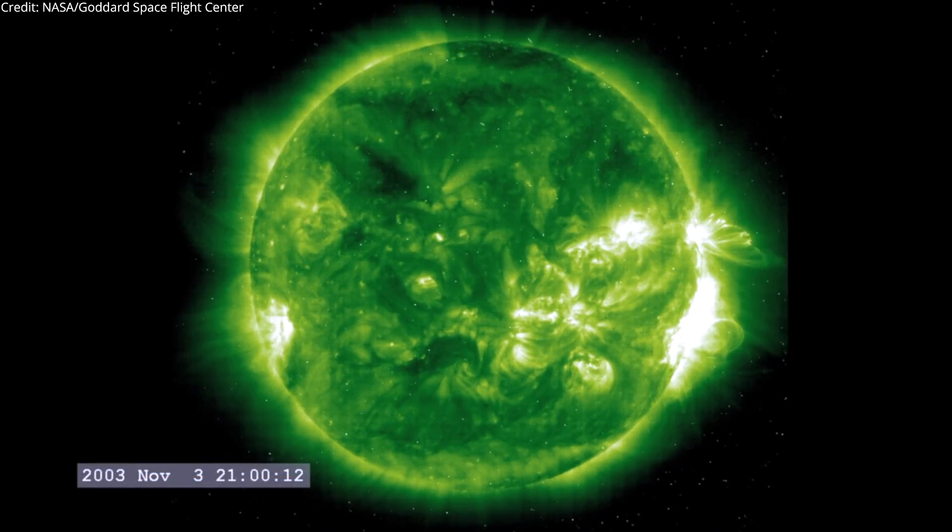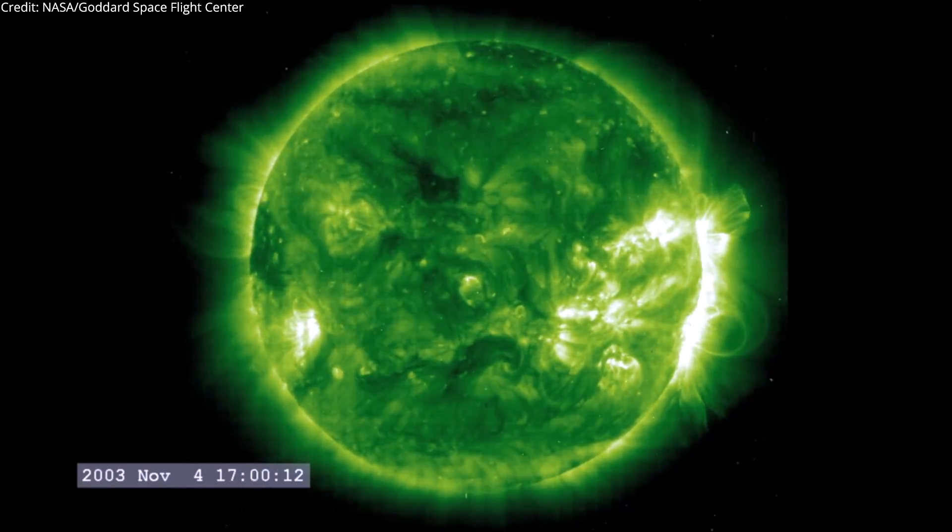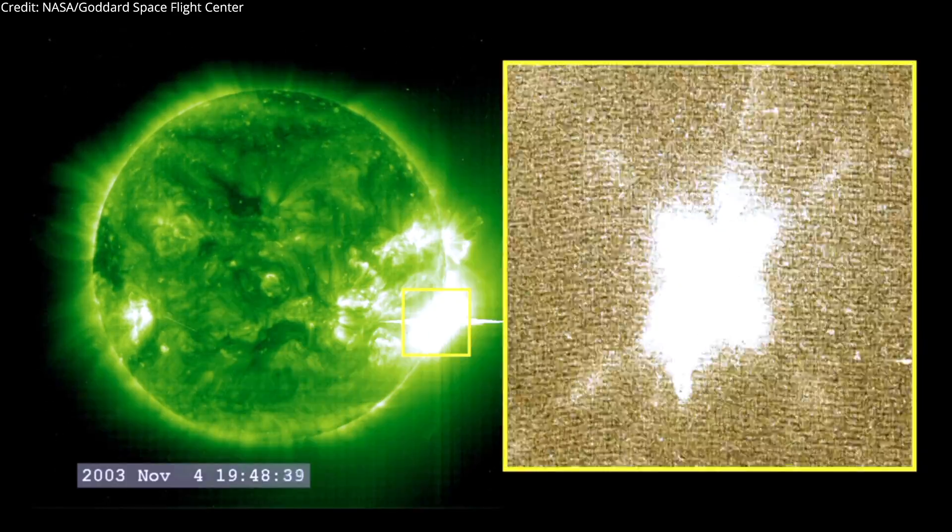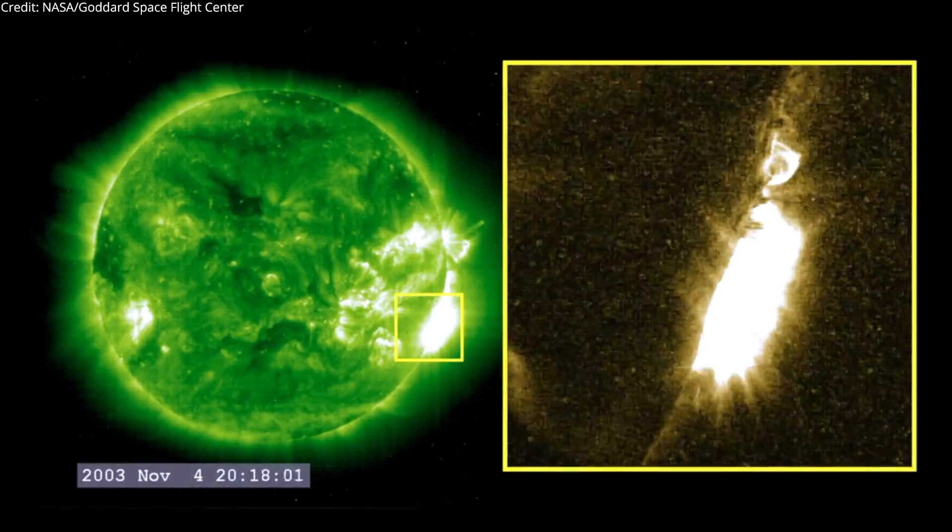The most powerful flare on record was in 2003, during the last solar maximum. It was so powerful that it overloaded the sensors measuring it. They cut out at X17, and the flare was later estimated to be about X45.